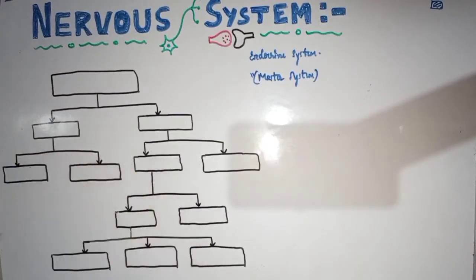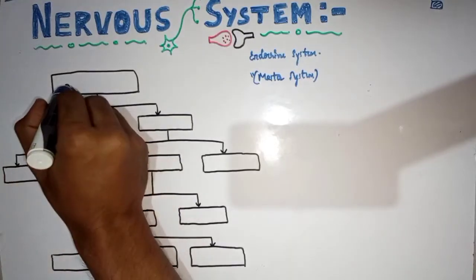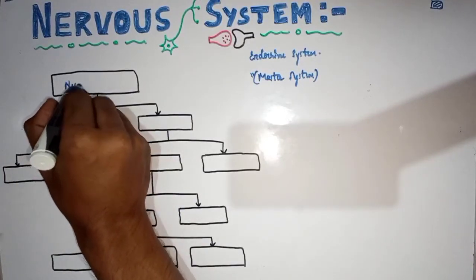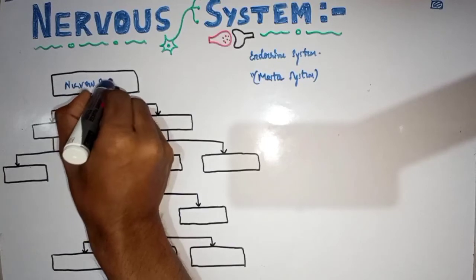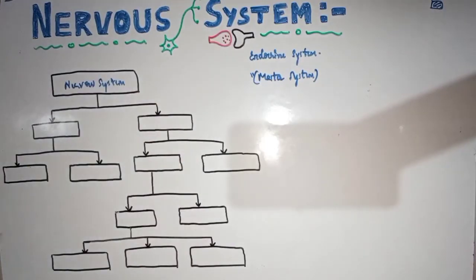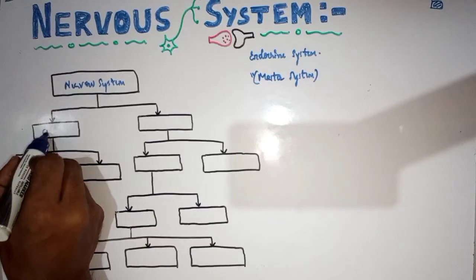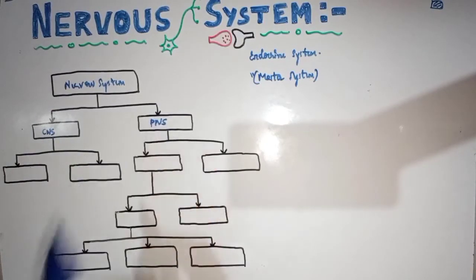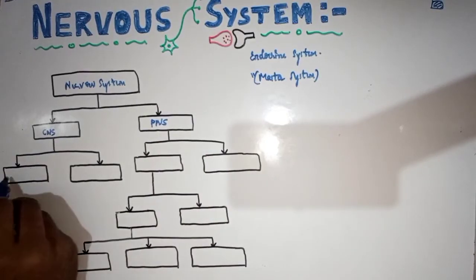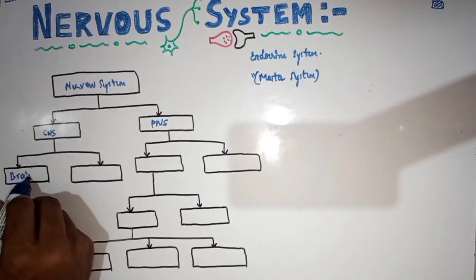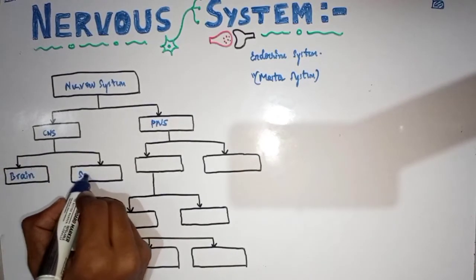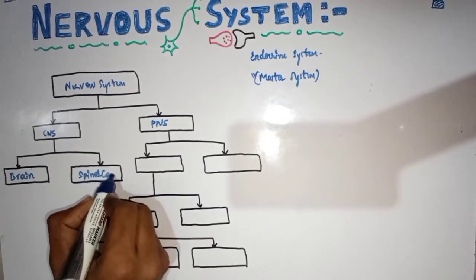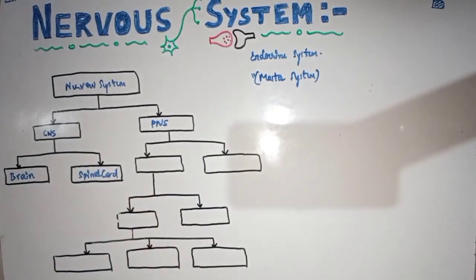With that brief introduction, I will now discuss the flowchart of the division of the nervous system. The nervous system is basically divided into the central nervous system, CNS, and the peripheral nervous system, PNS. The central nervous system is again divided into the brain and spinal cord.